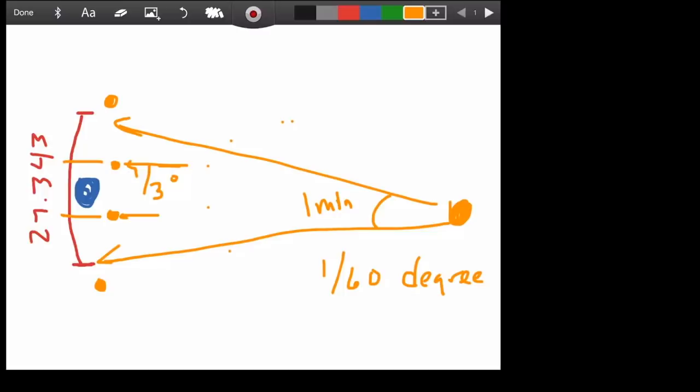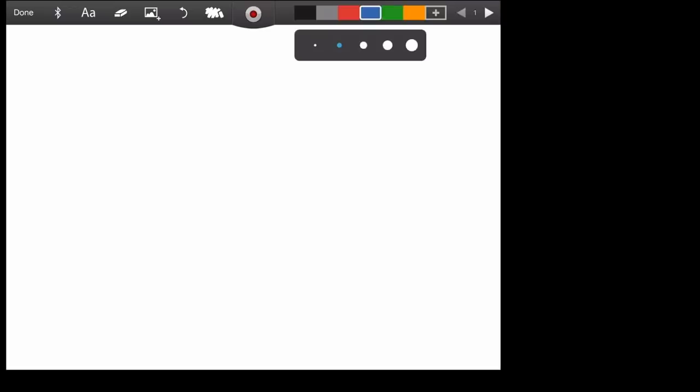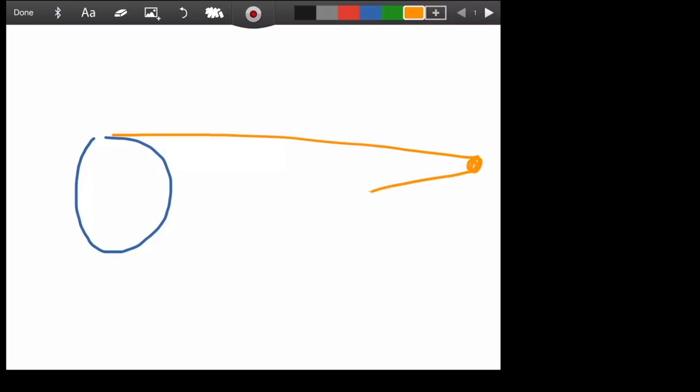And as a result of that, when we get light that comes in to the Earth, the light that comes in up here is so close to the light that comes in down there that these lines right here are essentially parallel.